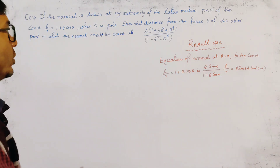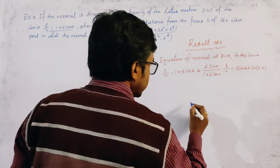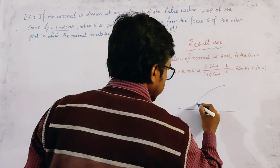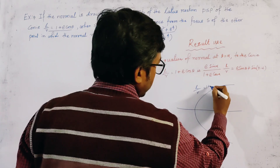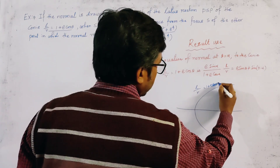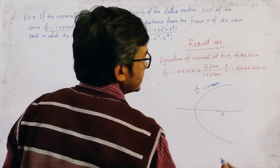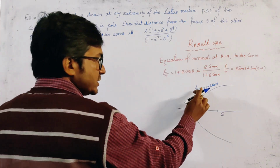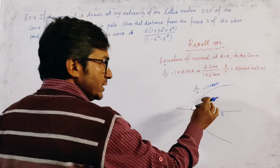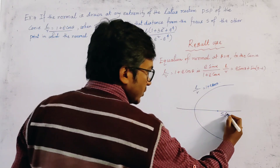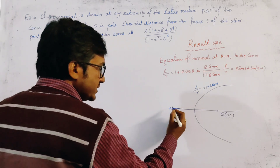If we draw a rough sketch of the conic, it is given by L/R = 1 + E cos θ. Let this be the focus S. Since the conic is L/R = 1 + E cos θ, we know the focus is the pole, so the coordinates of the pole are (0, 0). The negative direction of the x-axis is the initial line.